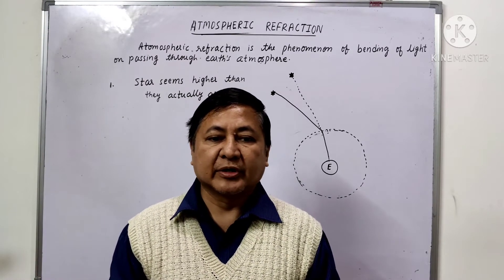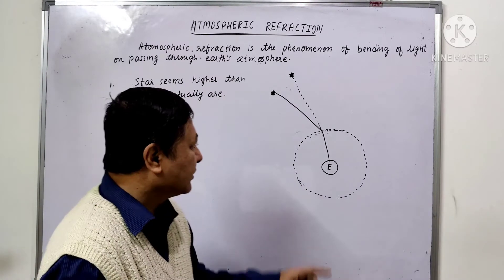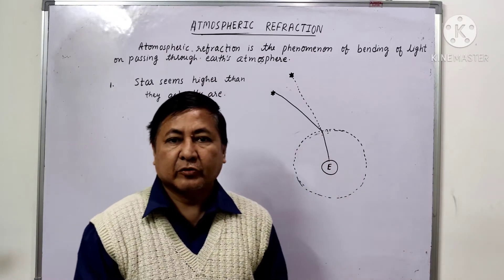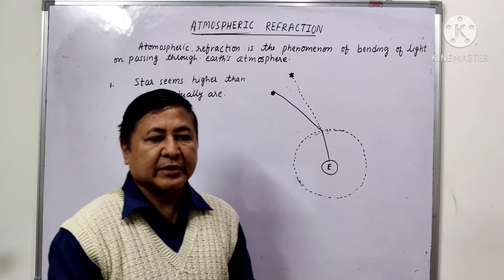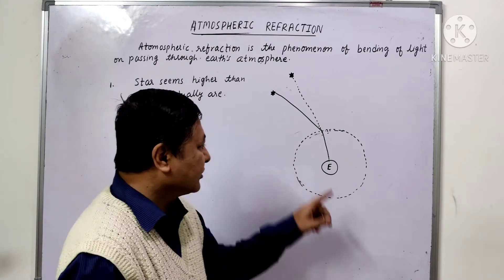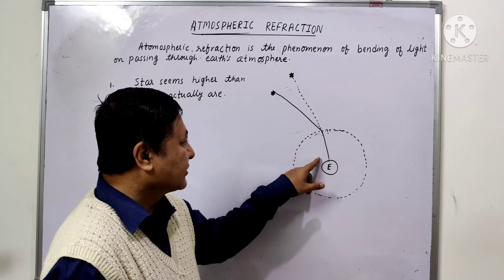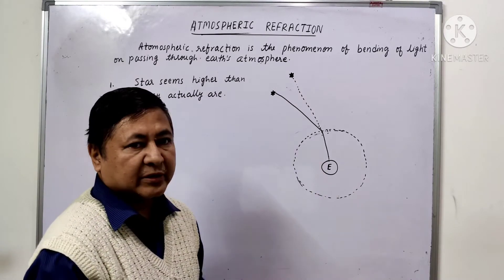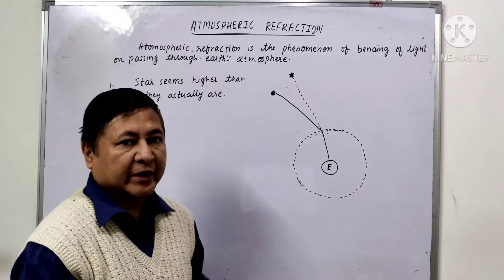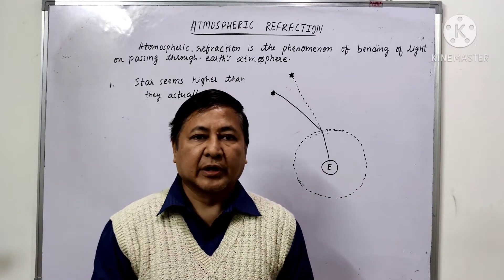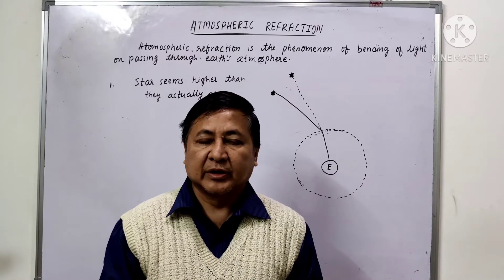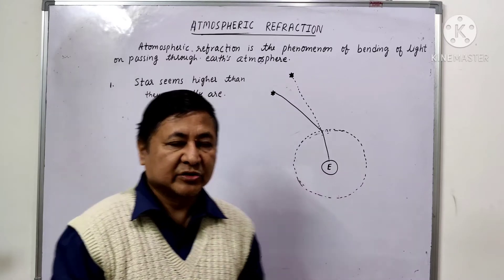Light coming from the stars and entering the earth's atmosphere passes from a rarer medium to the denser layers of the atmosphere. Therefore it suffers multiple refraction before reaching the earth. This multiple refraction is due to atmospheric refraction. Now let us study the phenomena based on atmospheric refraction.